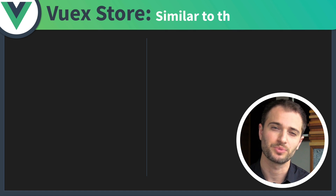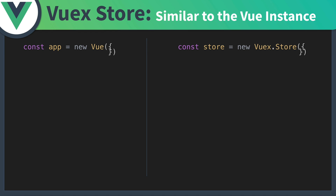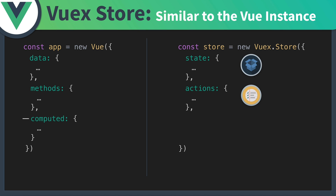And if you're familiar with Vue, Vuex should look pretty similar. Just like we create a new Vue instance, we can create a new Vuex store with new Vuex.store. While the Vue instance has data, the Vuex store has state — both of which are reactive. The Vue instance has methods which can update our data, while the Vuex store has actions which can update the Vuex state. And while the instance has computed properties which can access our data, the Vuex store has getters which can access our state.